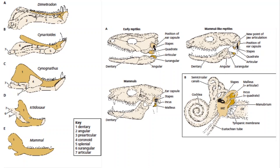Regardless of whether you're a mammal or a reptile, the only bone that supports teeth in the lower jaw is the dentary bone. All the other bones get shifted around, reduced in size, or moved. The only bone that stays behind in mammals is the dentary bone. That means all mammals have a dentary-squamosal jaw articulation, while reptiles have a quadrate and articular articulation.